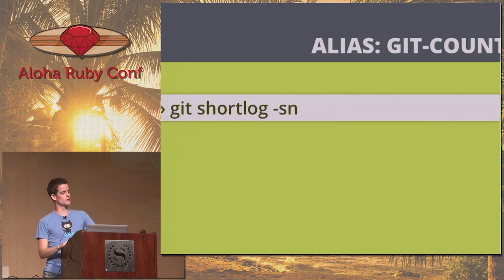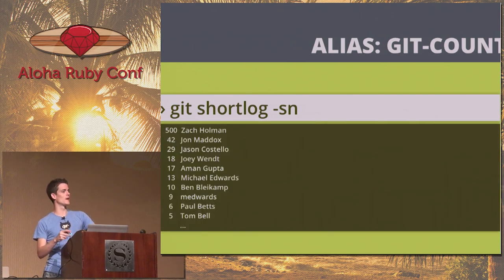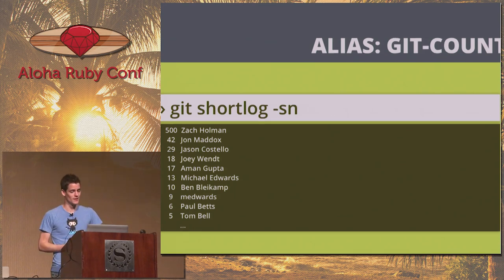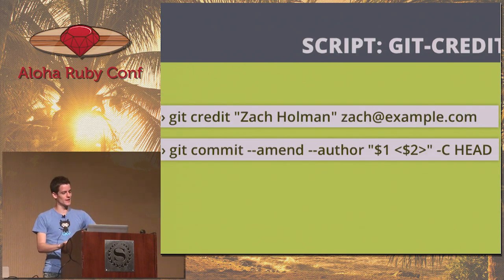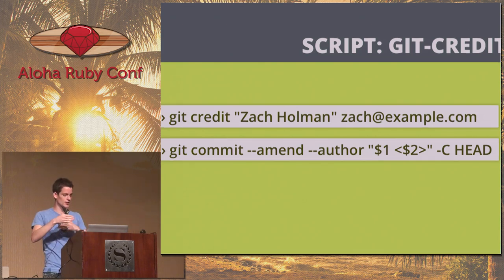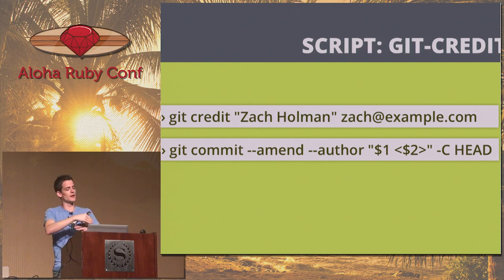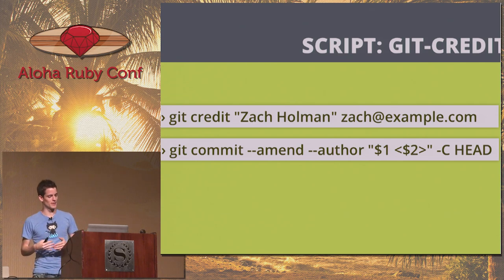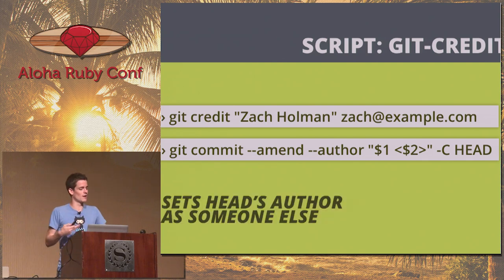Git count: I alias this to git shortlog -sn — a nice way to jump into a repository and see who's actually working on it. Git credit is just a script that runs git commit --amend --author, basically saying I want this person credited for this commit. Git actually has both an author bit and a committer bit — you can say this person is the author of this commit and I am the committer. This is great to remember who to contact if something breaks.